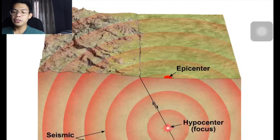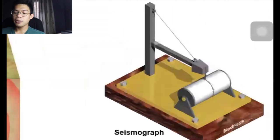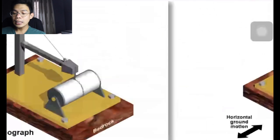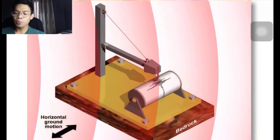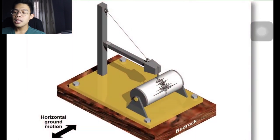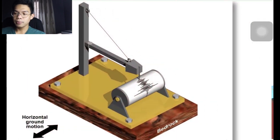During an earthquake, an instrument called a seismograph can record the types and speed of seismic waves. The seismograph has a suspended weight attached to a support fixed to the ground. The inertia of the suspended weight keeps it motionless, while the recording drum and support vibrate in response to seismic waves generated from a distant earthquake.